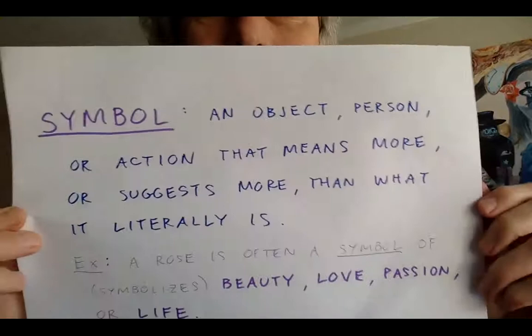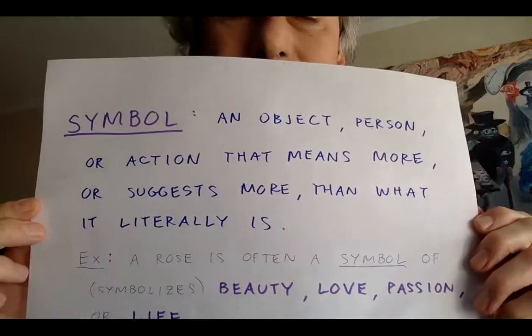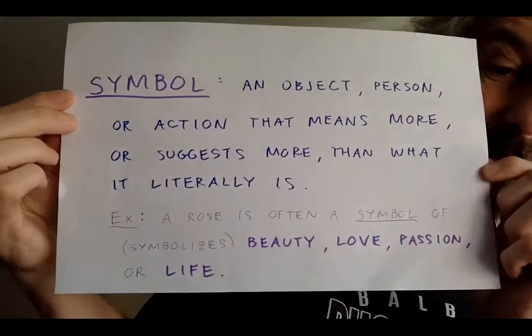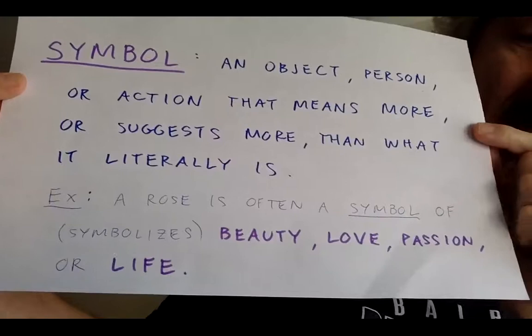And we get to symbol, which is slightly more complex and deep. Here's the definition: a symbol is an object, person, or action that means more or suggests more than what it literally means. I used the example of a rose. Rose often symbolizes beauty, love, passion, or life itself — four different things. You can see this in daily life: roses are used for Valentine's Day to express love, and even the color of the rose has symbolic value.